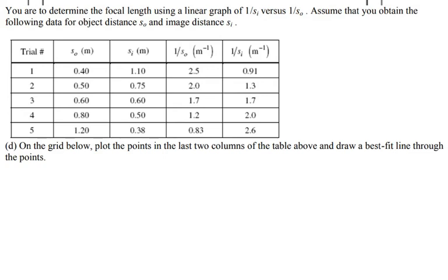So for the next section of the questions, they have you to determine the focal length using a linear graph, one over S of the image and one over S to the object. Assume that you obtain the following data for the object distances SO and SI provided in the table. And then they also do the calculations for you. So you have one over SO and one over SI.